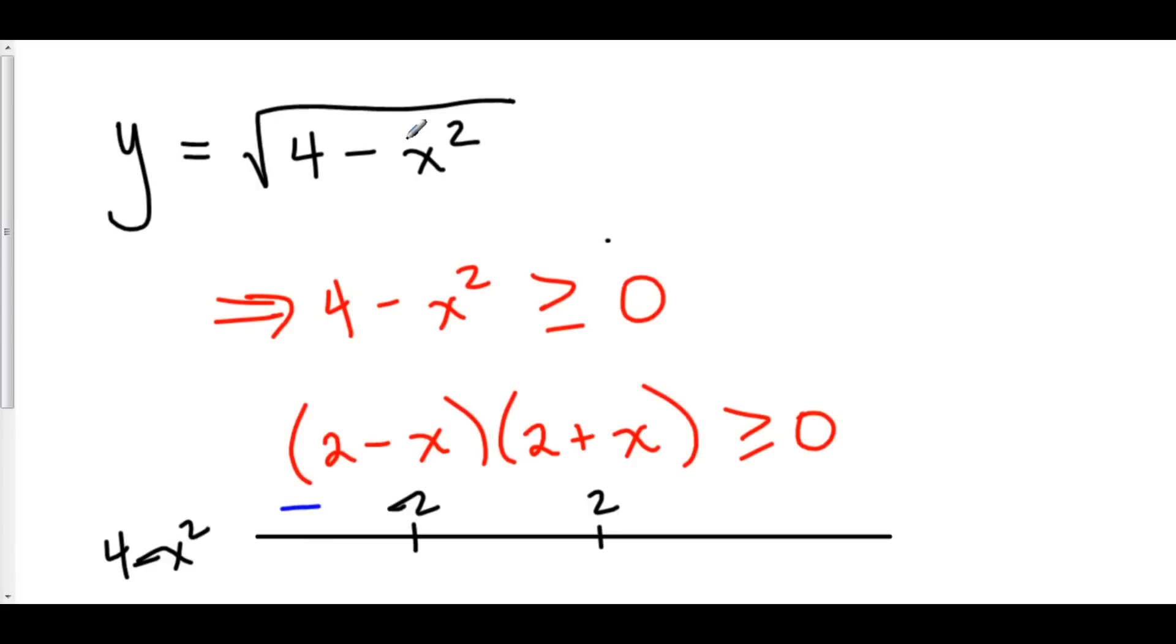Because then we're taking the square root of a negative number. You can test it, even. I mean, imagine, for example, plugging in negative 10. Negative 10 squared is 100. 4 minus 100 is negative 96. I mean, to find real solutions, you can't take the square root of negative 96. So, everywhere to the left of negative 2, this thing's not going to exist.